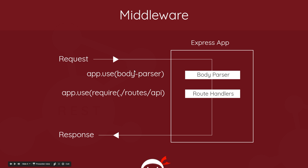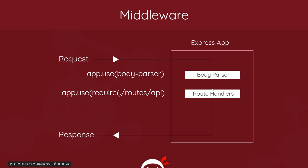If we want to use body-parser, we'd use it at the top of the cycle using app.use(). When the request comes in, body-parser is going to look at the body of the request, parse it, and attach it to the request object. In these route handlers we get access to that request object, so by the time the request reaches the route handler we can say request.body to get that data. Order here is very important — if body-parser is placed after the route handlers in the code, the handler will be hit before body-parser has done its work and we won't have access to that body data. So body-parser needs to go first in the cycle.